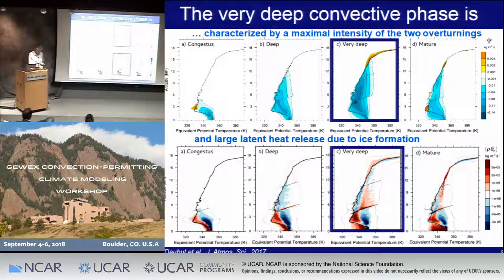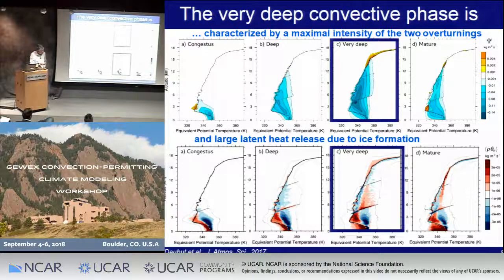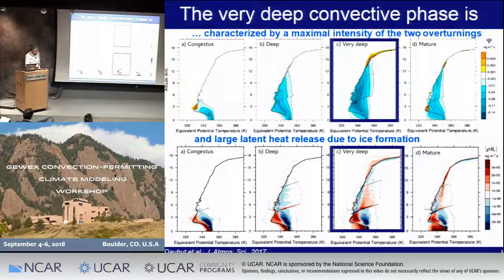We can contrast the very deep convection phase — which lasts about one hour — with previous phases. For the very deep convection phase, overturning in the troposphere and in the tropical tropopause layer are the largest. This can be explained by looking at the diabatic tendencies: in blue where air masses are cooling and in red where they are warming. In the updraft area, updrafts cool by mixing with environmental air, but during the deep convection phase in the mixed-phase region, there is positive warming due to ice formation. This ice formation provides extra latent heat, allowing the air parcels to ascend.